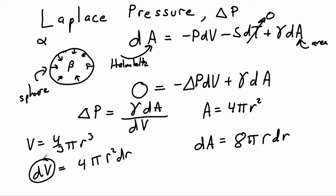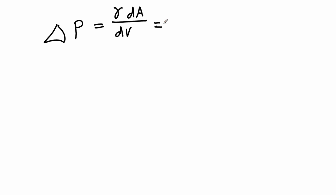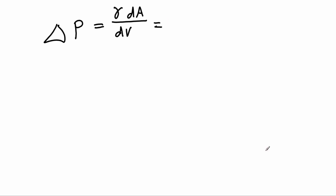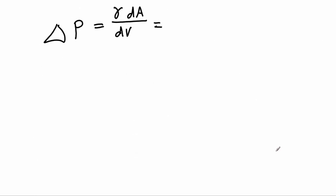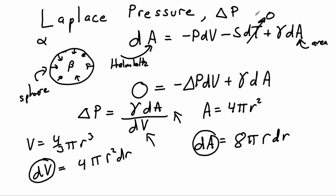So now we've got our dV piece, got our dA piece, and we're going to take both of those and plug them in for a new expression. So we can just plug in our expressions for dA and dV. dA is going to be 8πr dr, and dV is going to be 4πr² dr.